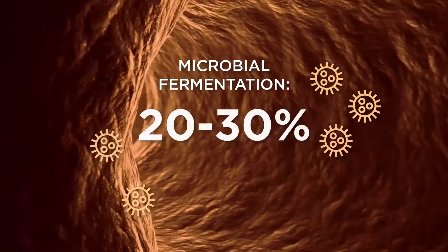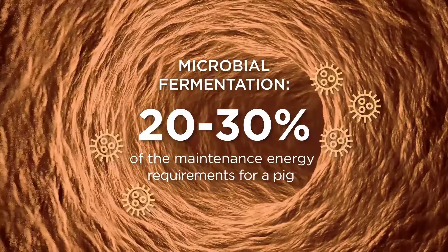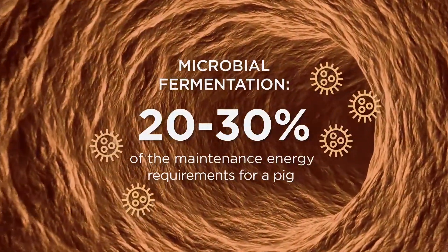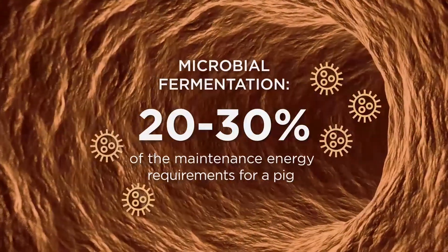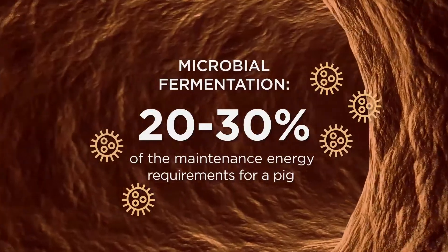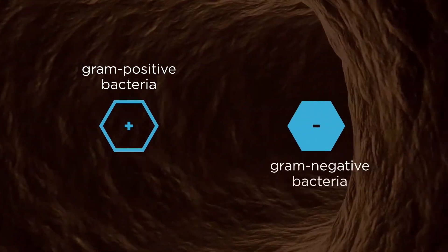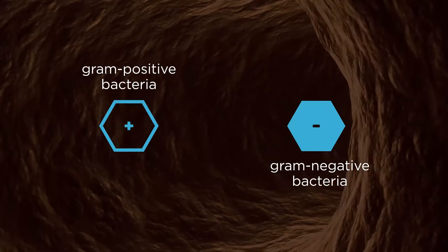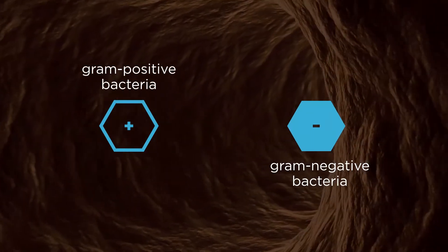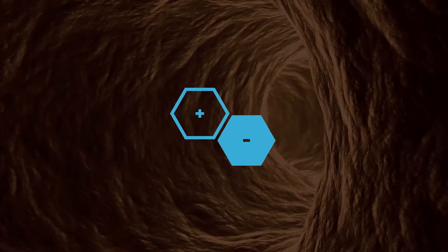In fact, 20 to 30% of maintenance energy required for a pig comes from this microbial fermentation. Turning feed into volatile fatty acids, or VFAs, is how the gut flora, made up of gram-positive and gram-negative bacteria, create energy for the pig. Let's take a closer look at how naricin impacts these gram-positive and gram-negative bacteria.